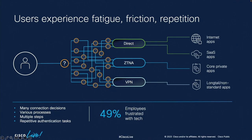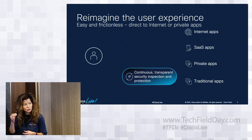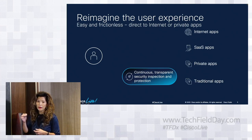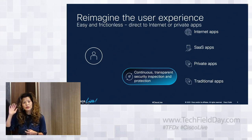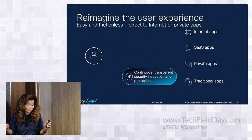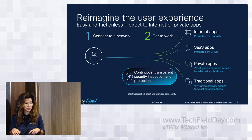A poll shows 49% of employees are frustrated with technology. With Cisco Secure Access, we want to deliver an easy and frictionless experience. Users will be able to automatically access any application — whether on-prem, SaaS, or internet — without needing to know the difference. All they need to do is connect to the network and get to work; we'll handle all the underlying technology under the hood.